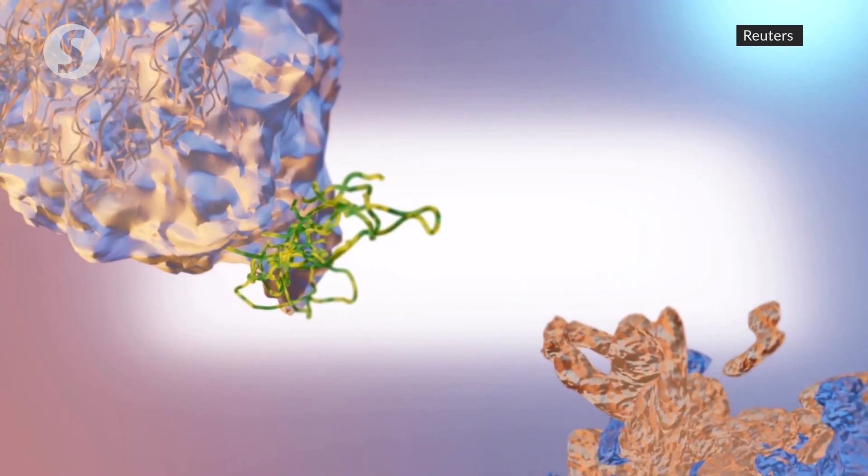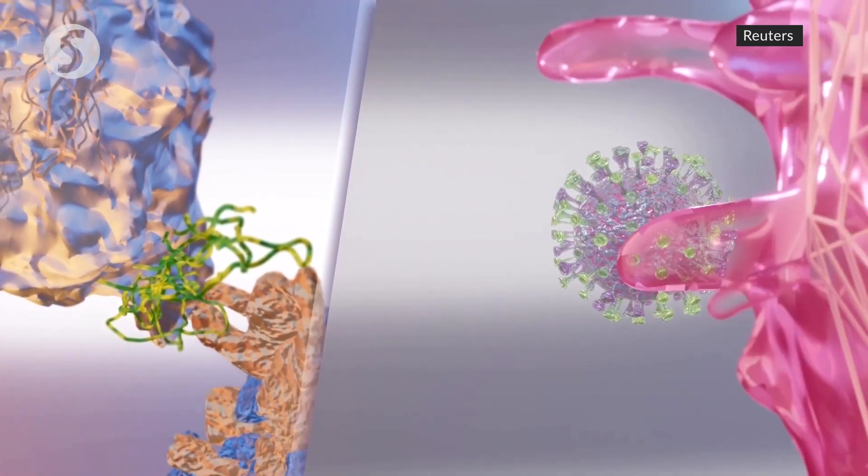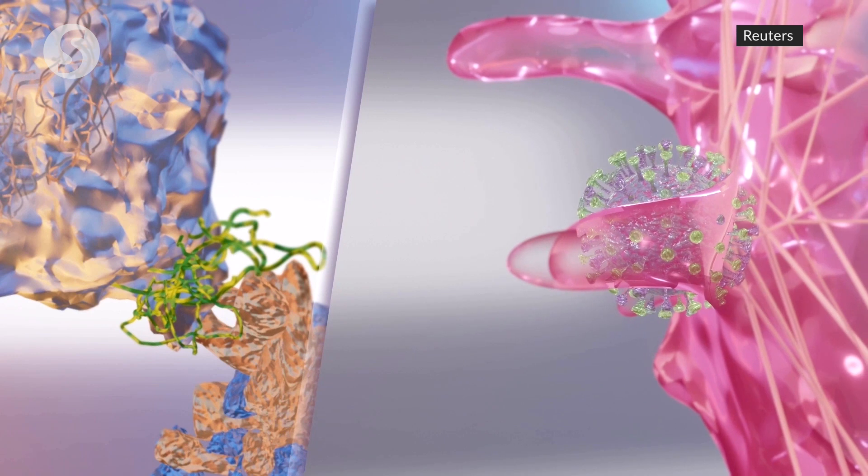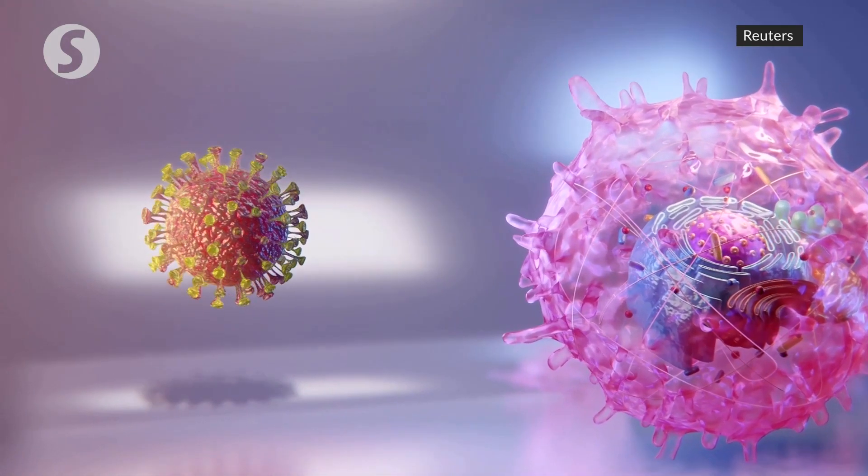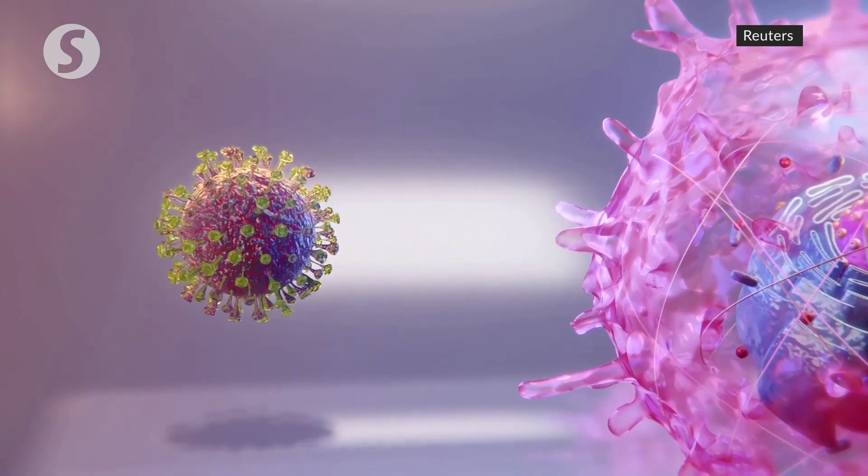The virus targets a human ACE2 receptor that has bonded with an amino acid transporter. This subtype of ACE2 structure has never been discovered before. The virus uses the spike protein's up RBD to penetrate the cell.